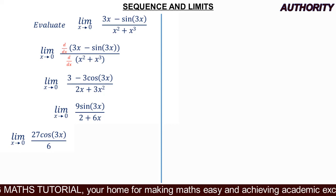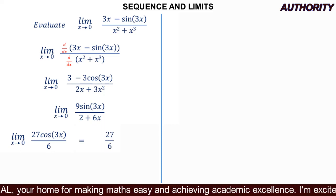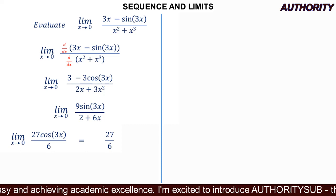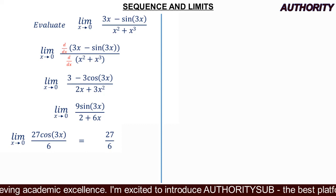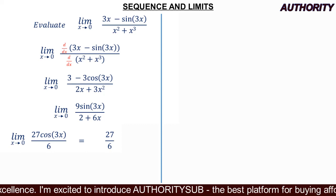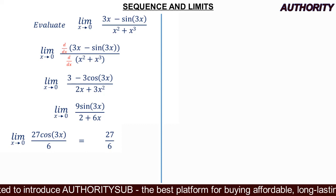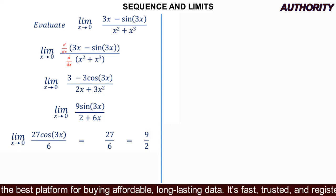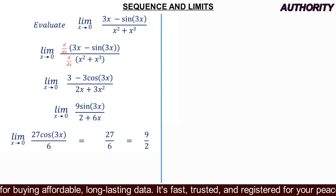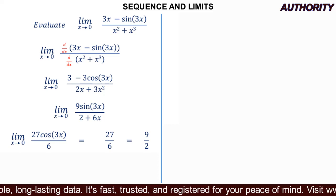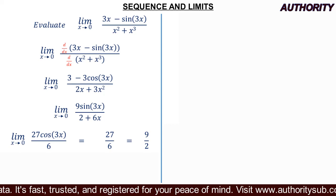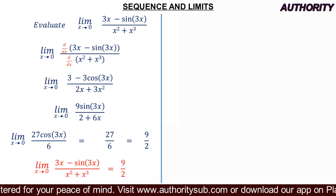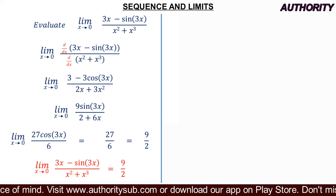Plugging in x = 0 for the last time: in the numerator, 27 cos(0) = 27 × 1 = 27. So we have 27 over 6. Reducing to lowest terms by dividing both by 3 gives us 9 over 2.